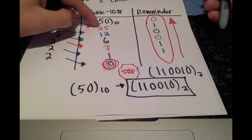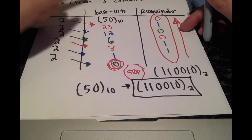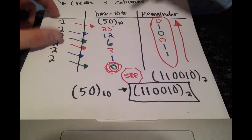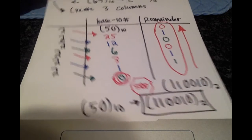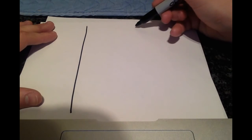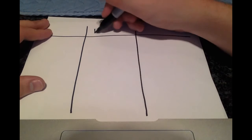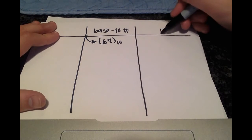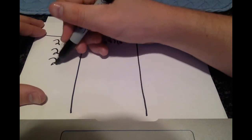You start off with the number you're given in base 10, you divide that number by 2 and record the remainder each time. I used different colors to indicate where we're going. Let's do the other example — it should be straightforward. Once again we're going to make three columns with our base 10 starting value, which in this case is 64, our remainder value, and all of our 2s.